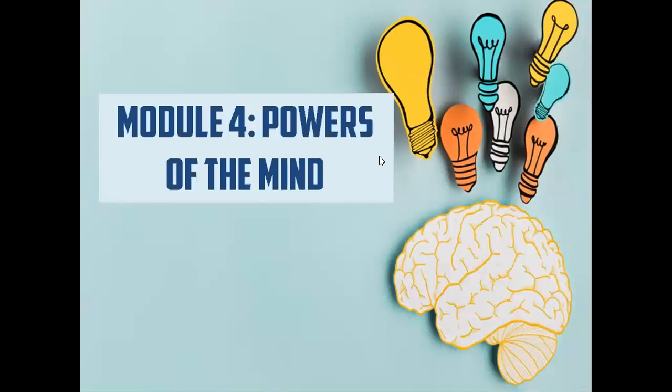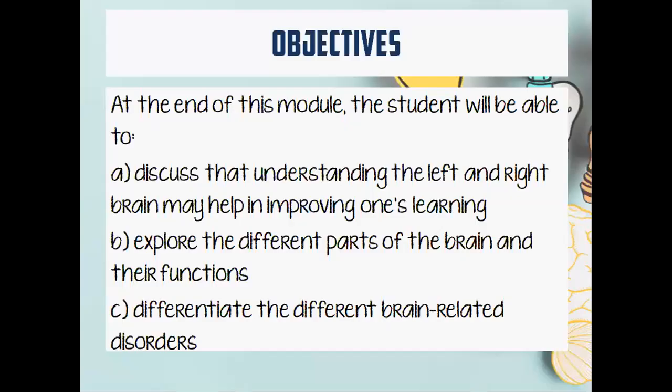When you hear about this, you might think that what you will learn here would be about mind reading and magic tricks. But technically, what you will learn here would be about the brain, its functions, its importance, and even the dysfunctions. So for our objectives, at the end of this module, you will be able to discuss that understanding the left and right brain theory is very important in improving one's learning. Secondly, you will be able to explore the different parts of your brain and their functions. And of course, you will be able to differentiate the different brain-related disorders.